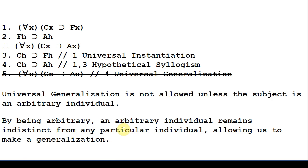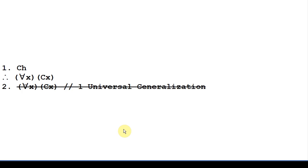Let's look at a more concrete and simpler example. We have as our premise: Holly is a calico. And we want to conclude: everything is a calico. Well, that's obviously invalid, and the rule of universal generalization is not going to let us do that.